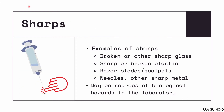Next, let's talk about sharps. Sharps are one of the most significant causes of biological hazards in the clinical laboratory. In fact, finger pricks or needle pricks are the most common injury encountered in the lab. Examples of sharps are broken or other sharp glass, sharp or broken plastic, razor blades or scalpels, needles, and other sharp metals.